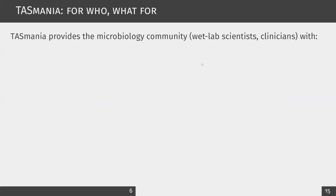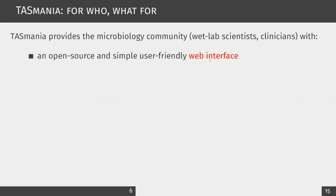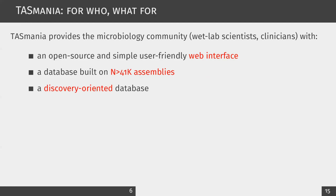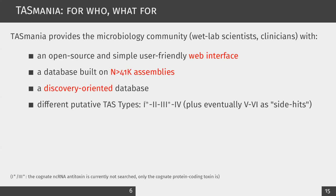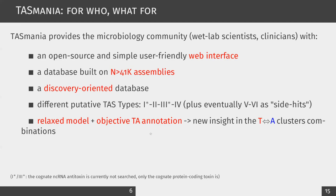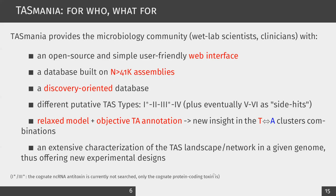The target audience is wet lab and clinician microbiologists. It is based on a very simple web interface and contains a very large list of assemblies drawn from EnsemblBacteria. We chose to make Tasmania a discovery-oriented tool that comes at the cost of a certain number of false positives. Putative TAS hits can be of any type as long as there is a protein-coding cognate. Thanks to a relaxed model and objective annotation, Tasmania provides a deeper insight into TA cluster combinations and allows characterization of the TAS landscape of a given genome for designing TA mutants and deletions.